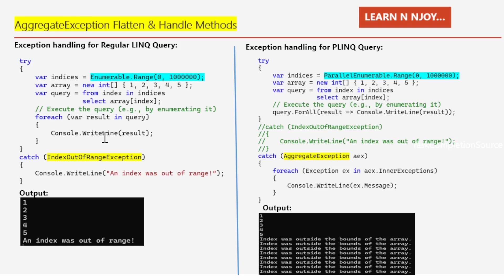If the index is out of range, we catch the IndexOutOfRangeException in the catch block and print the error message. As you can see in the output, one through five got printed, then the index out of range exception was caught and the message was printed.